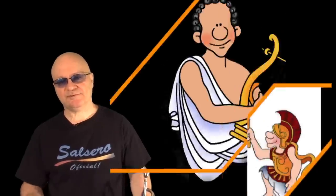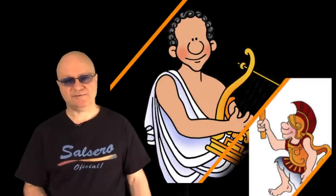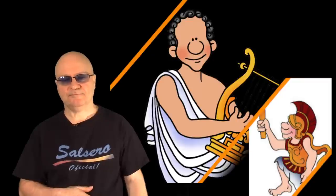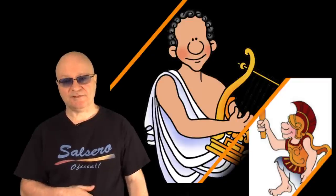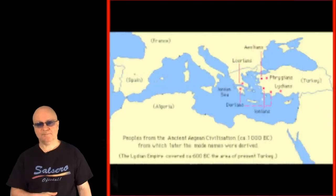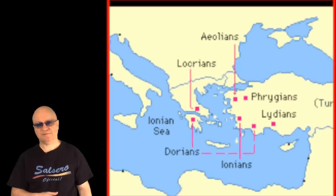From these seven notes the Greeks gradually developed the seven modes. Each mode consisted of the same seven notes but had its own unique tonic. The modes were named after the Greek region or the people from which it was derived, or from where it was particularly popular.